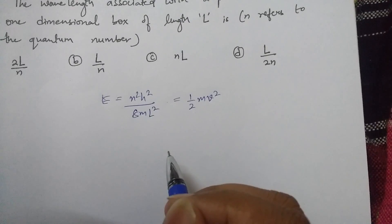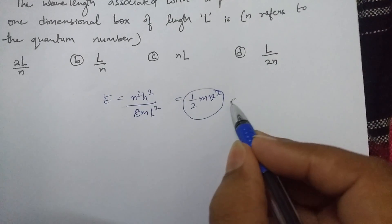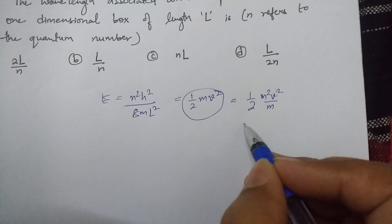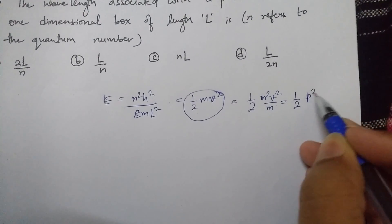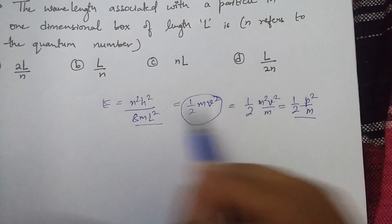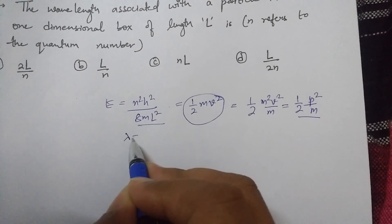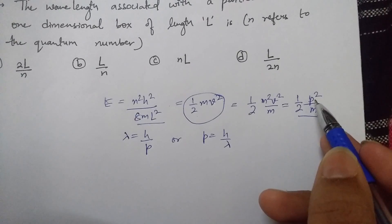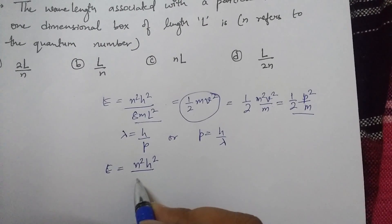We can rewrite ½mv² as (m²v²)/(2m), and since mv is linear momentum p, this becomes p²/(2m). So energy can be written in these two ways and we can equate them. We'll also use the de Broglie equation: λ = h/p, or p = h/λ. Substituting the value of p, we get E = (h/λ)²/(2m) = n²h²/(8mL²).